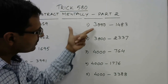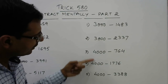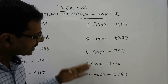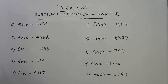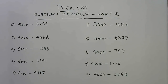We can also apply this method to subtracting numbers from 3000, 4000, 5000, and 6000. I have taken examples up to 6000 and in subsequent videos I will take up numbers beyond 6000 as well. Remember, the trick is valid only for numbers which are exact round thousands. You can extrapolate the method once you know it, but be careful — in maths, nothing applies to everything.